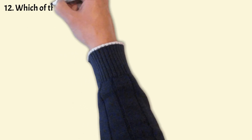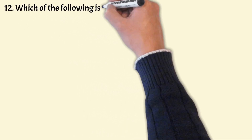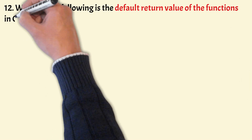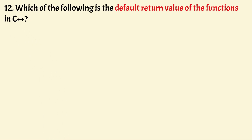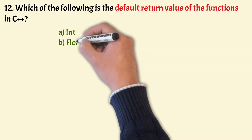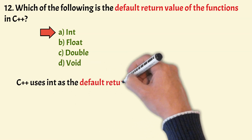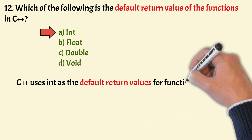Which of the following is the default return value of a function in C++? The options are int, float, double and void. The correct answer is option A, that is int. C++ uses int as the default return value for functions.